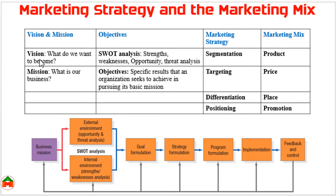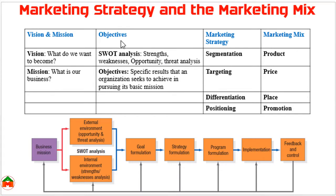Before determining objectives, the company may need to do a SWOT analysis — S indicates strengths, W weakness, O opportunity, and T threats. To determine achievable objectives and goals, the company needs to do SWOT analysis, and then determine objectives. Objectives are the specific results that an organization seeks to achieve in pursuing its basic mission. After objectives, the next issues are marketing strategy and marketing mix.